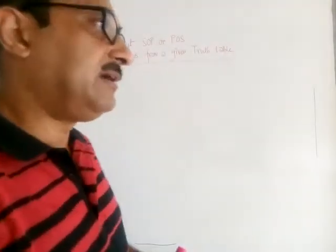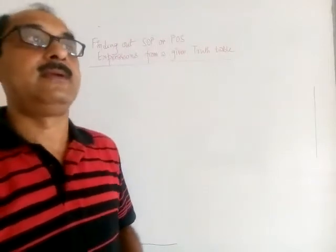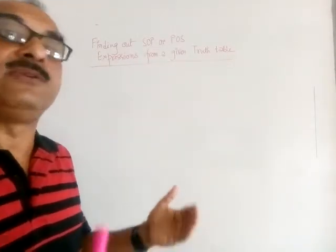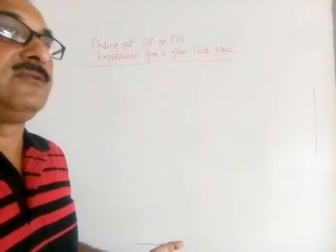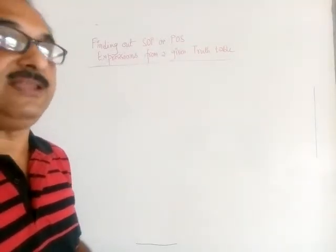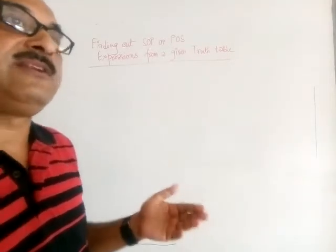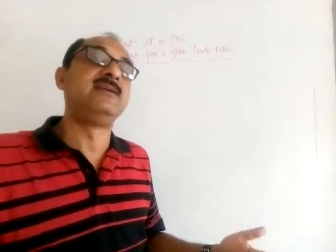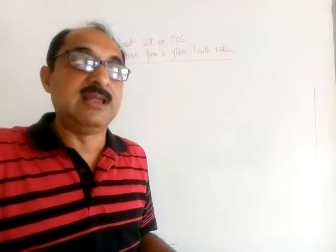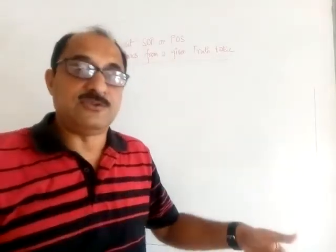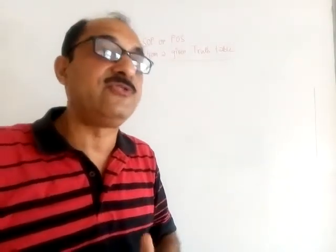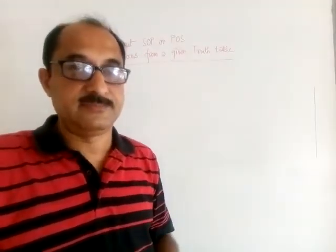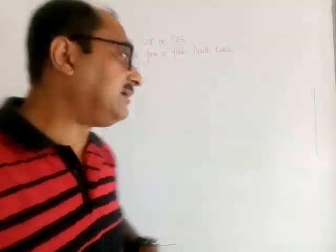Today we are going to learn a new topic. We will try to find out SOP and POS expressions from a given truth table. We know that whenever an SOP and POS expression is given to us, we can represent that in a truth table. Now imagine the truth table is given to you and you have been asked to find out the respective POS or SOP. Then how to do it? We will learn that.